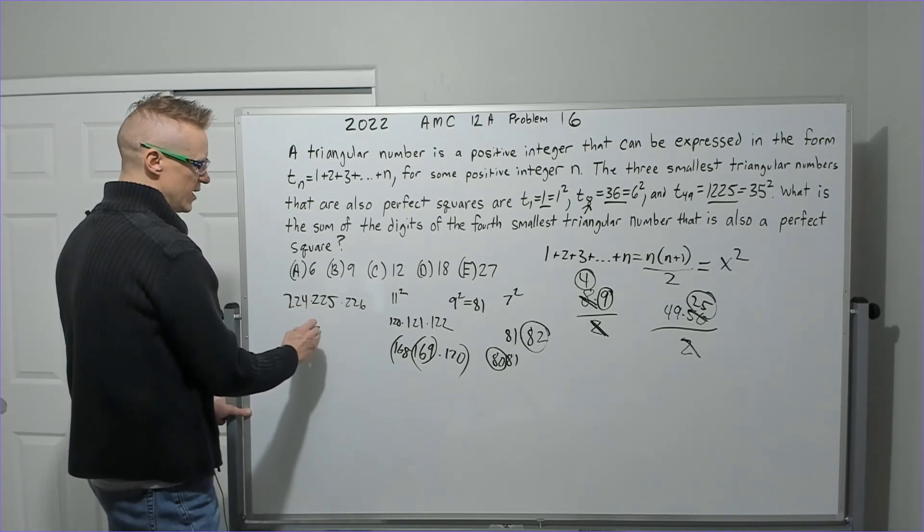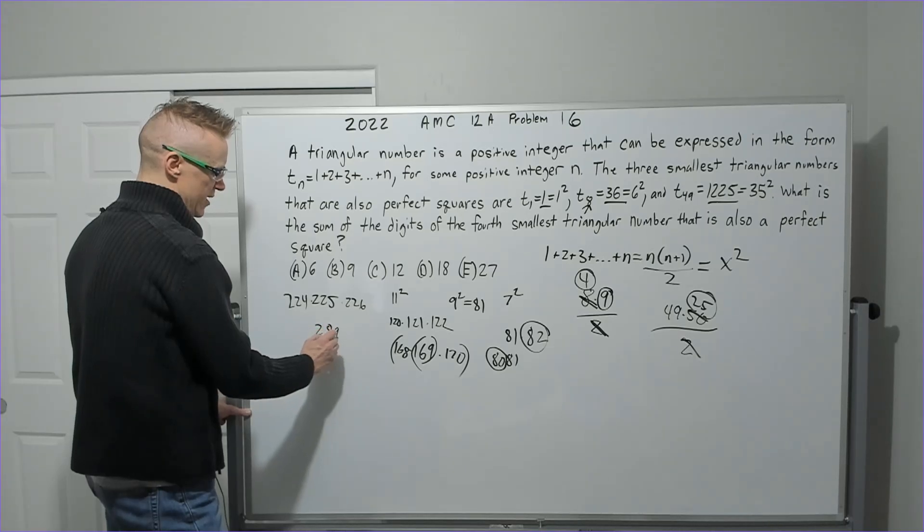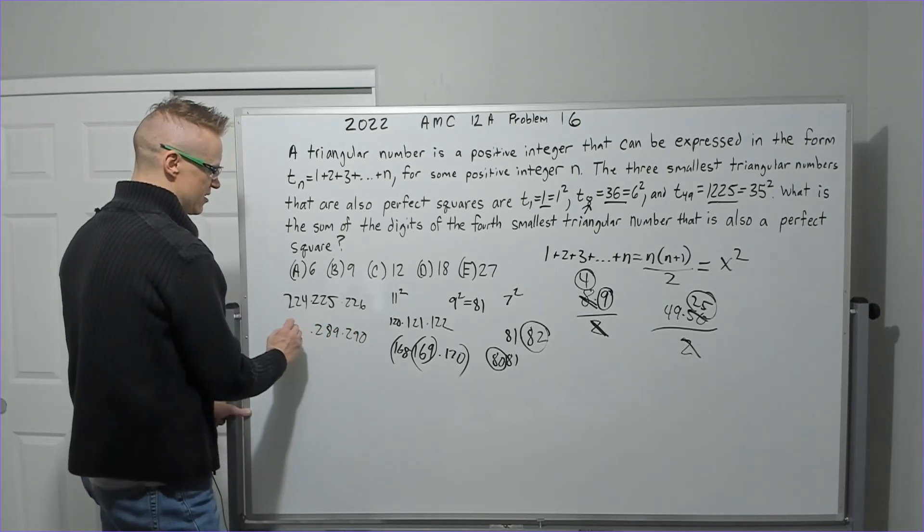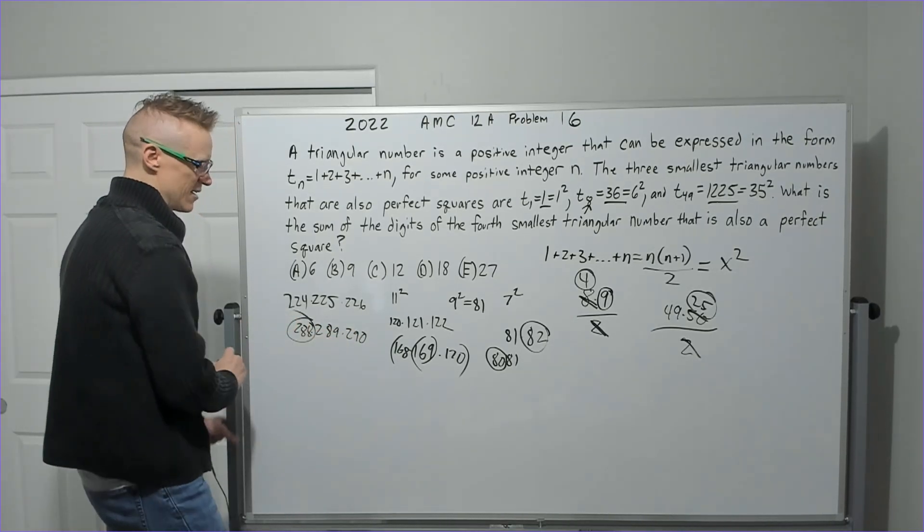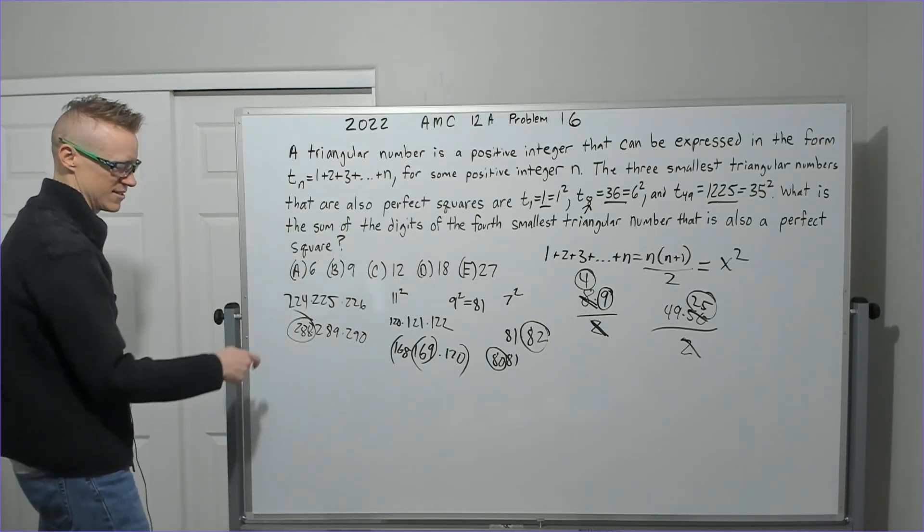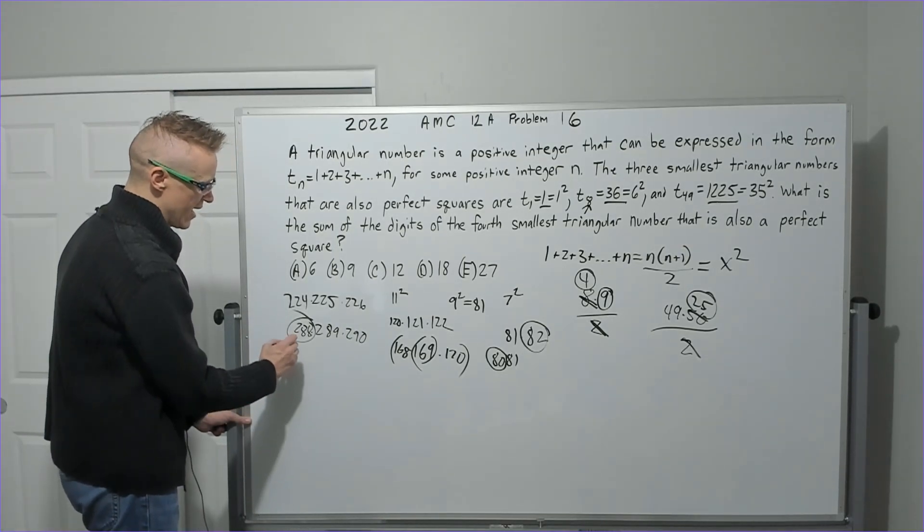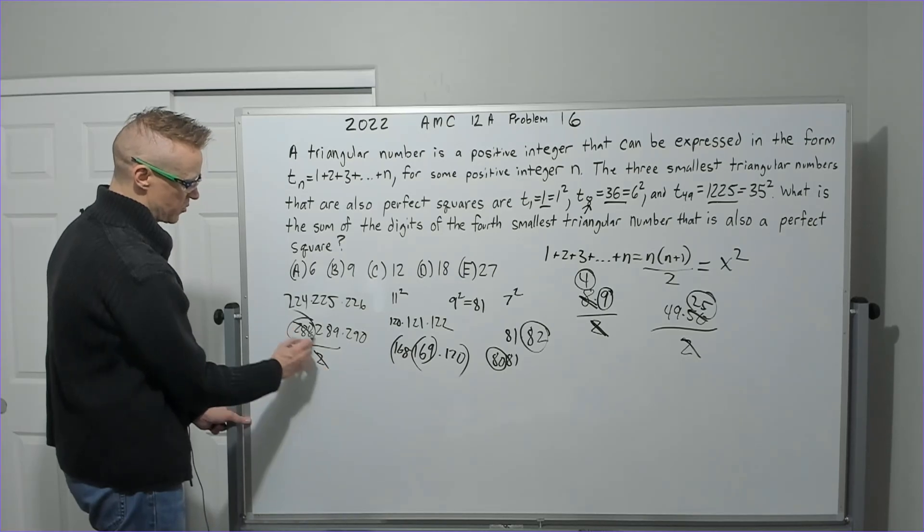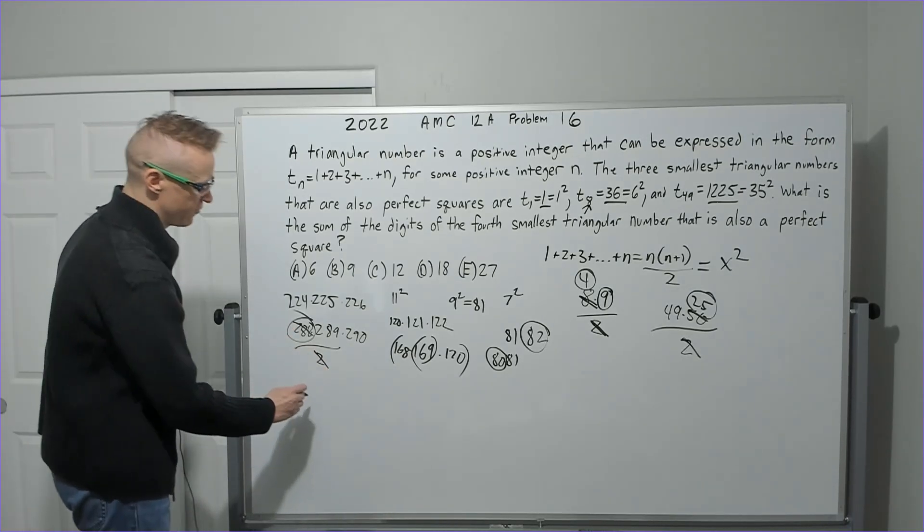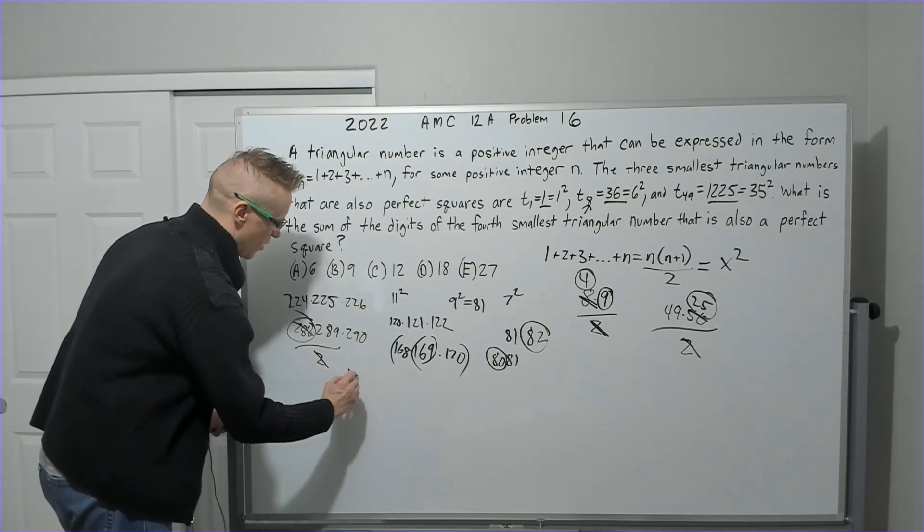Let's go ahead and do 17 squared: 289. 290, 288 - when you see that 288 you should get excited. That's 2 times 144. After you divide by 2 on this one, you're going to get 144, which is going to be 12 squared times 17 squared.